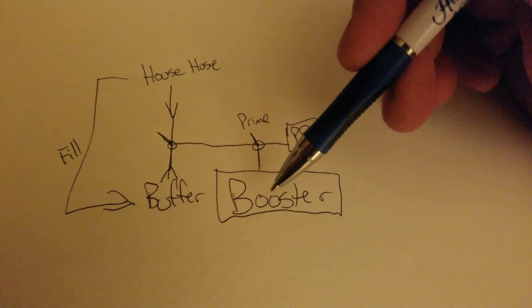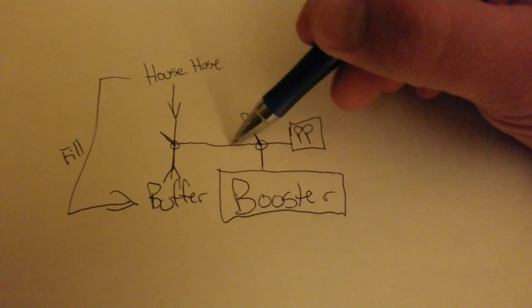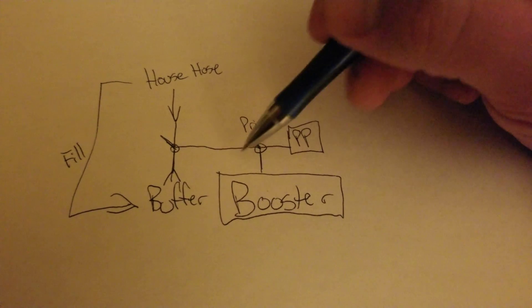So working back from square one: you've got your booster, this goes to your proportioner, this is your priming side. As you're priming this side, you're flipping back and forth right here on this three-way.